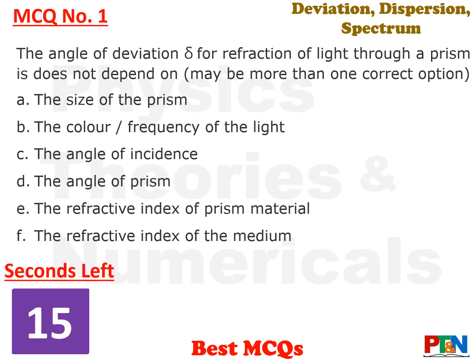First MCQ. The angle of deviation delta for refraction of light through a prism does not depend on which of the following factors? There may be more than one correct option. Six options are given. You have 15 seconds to get to your option. Your time starts now. If you require more time, do pause the video, take your time and come back.